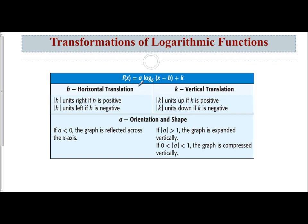The standard form for logarithmic functions of transformations is a log base b of (x minus h), that quantity, plus k. Again, a deals with the orientation — is it reflected across the x-axis if it's negative? It also deals with the shape. The larger the size of a, the more expanded vertically. Between 0 and 1, the more compressed vertically. Remember, h is your horizontal translation. Since the formula says x minus h, we need to remember it's the opposite of what you see, and k is your vertical translation.